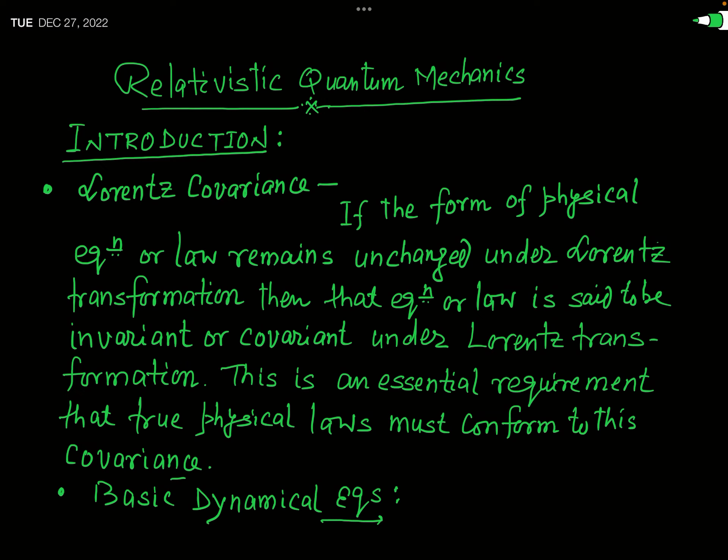In quantum mechanics, you have studied the Schrödinger equation — also called wave mechanics. And in classical physics and field theory, you have studied Maxwell's field equations, which are classical equations. You will see that Maxwell's field equations are actually invariant or covariant under the Lorentz transformation, but the Schrödinger equation is not covariant under Lorentz transformation.